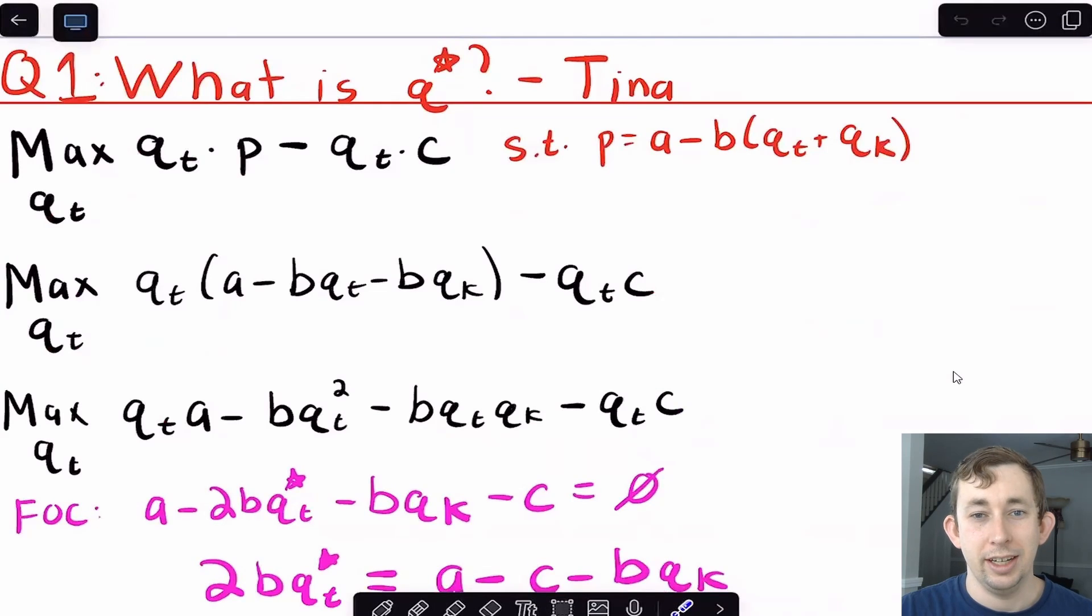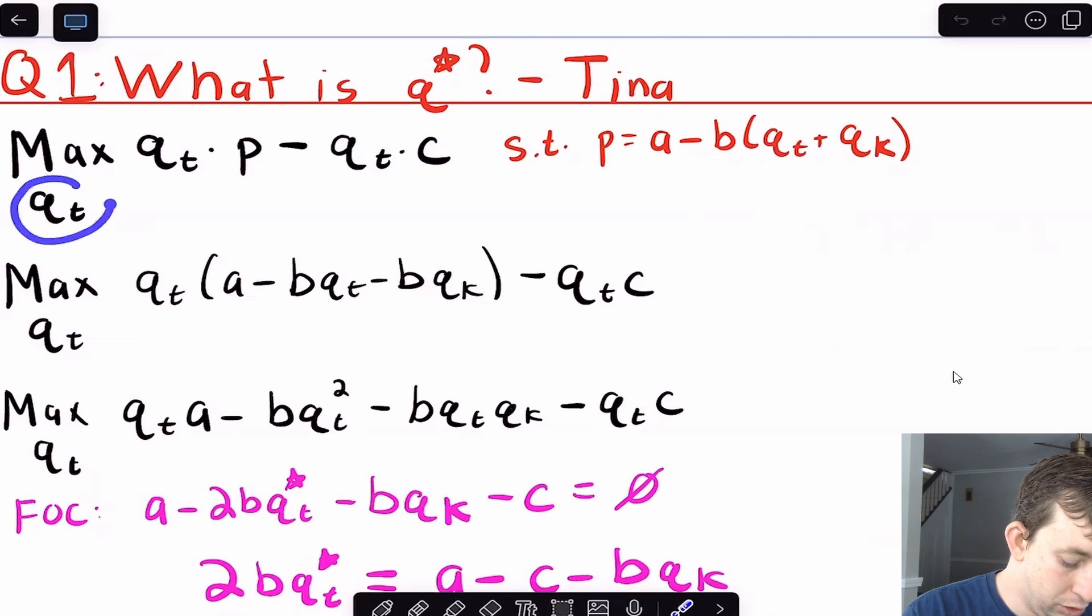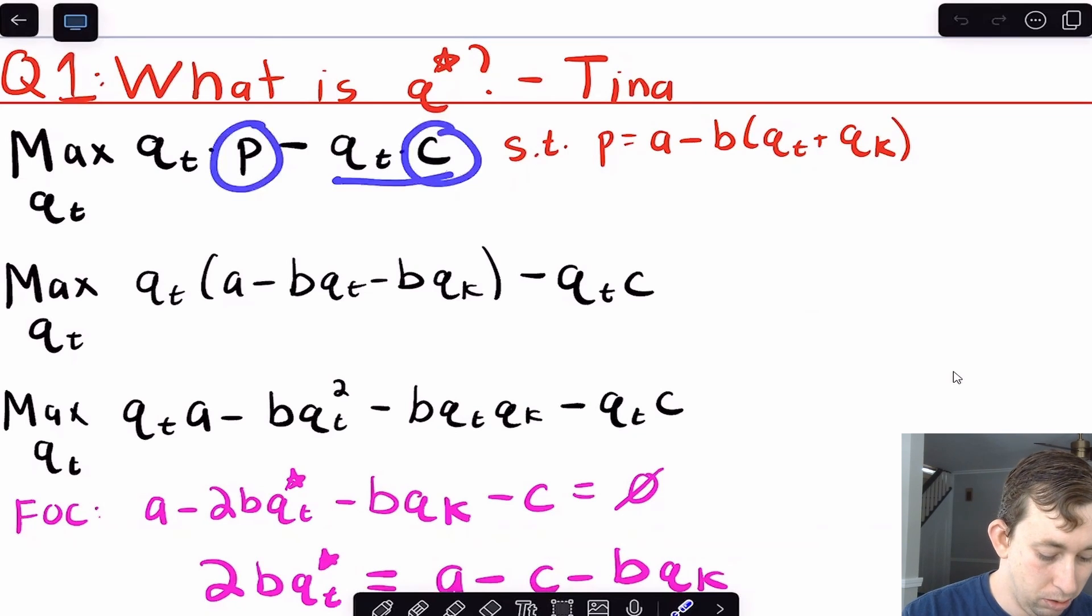So question one is very simple. We're just going to say, given what Kristen is doing, what is my optimal amount of quantity? How many things should I produce if I'm Tina? So if we're going to think about how many things Tina should make, we need to set up a profit maximization problem. That's the way I'm going to do that. So what Tina has a profit maximization problem where she's choosing qt, and she is going to get some revenue from making qt things, and she's going to have some costs for making qt things. Now notice that I have price, and I have this marginal cost, this is just total cost right here. But we said before that price was a function of how many things that Tina makes, but also how many things that Kristen on the other side of the street makes. So I need to think about both of those things.